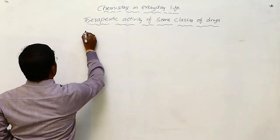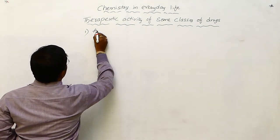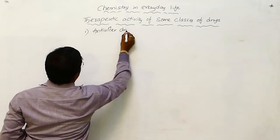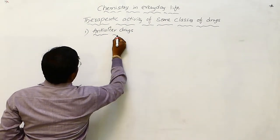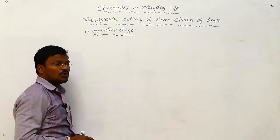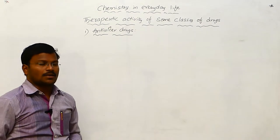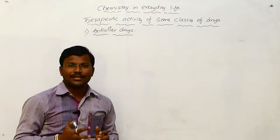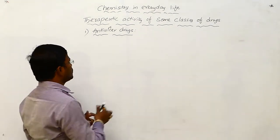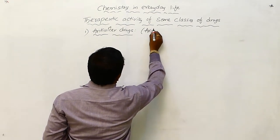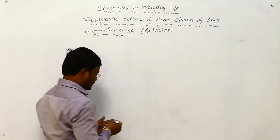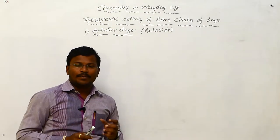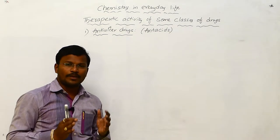The first type of drugs I would like to consider are anti-ulcer drugs. Based on pharmacological activity, these are drugs which are useful to reduce the ulcer condition in human beings. We can also call these antacids. The most amount of people in the universe are suffering from over acidity.